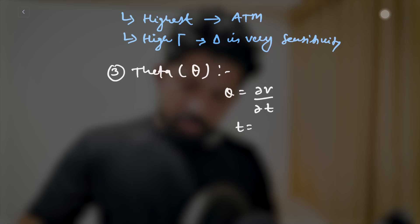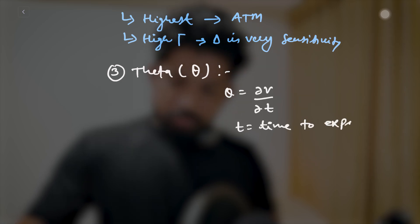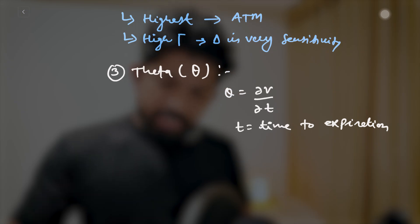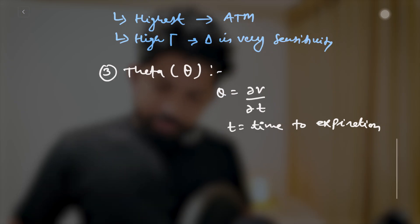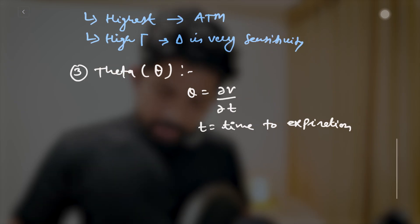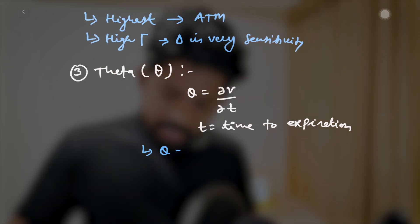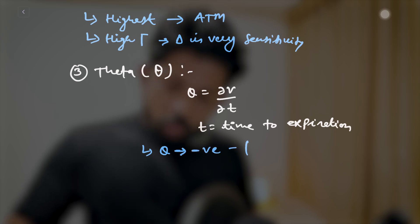The key interpretation for theta is that it is negative for both call and put options, meaning that as time passes, the option's price decreases — all else being equal.